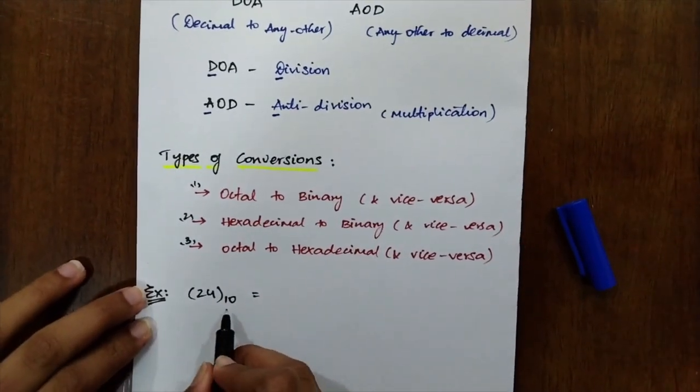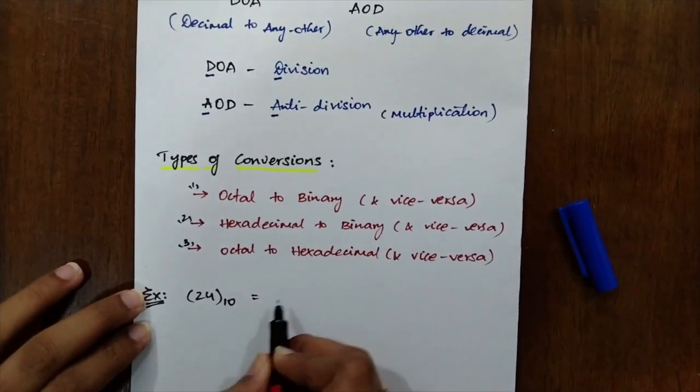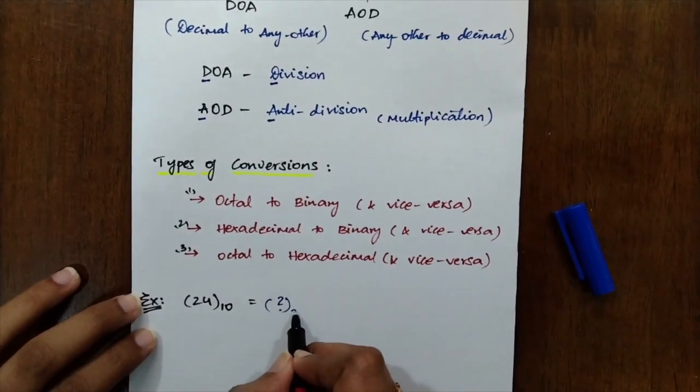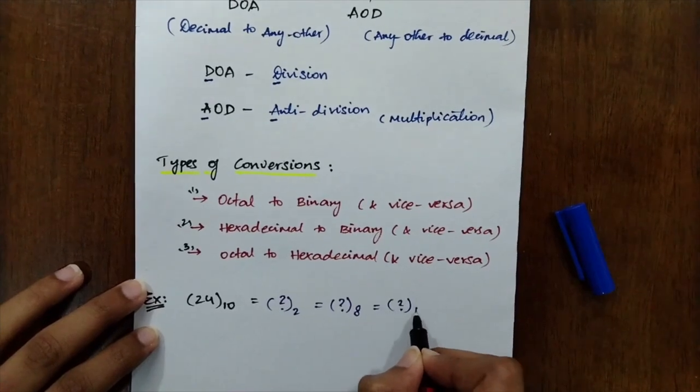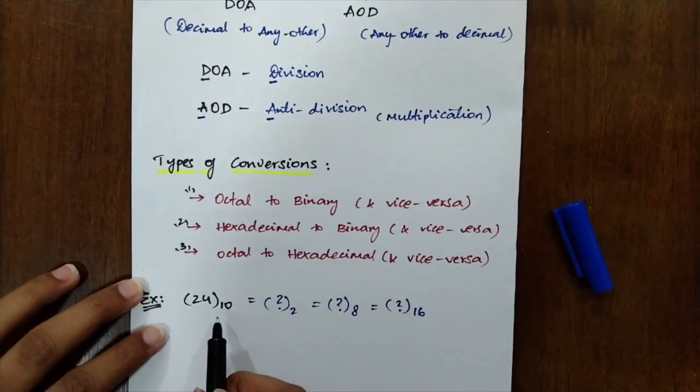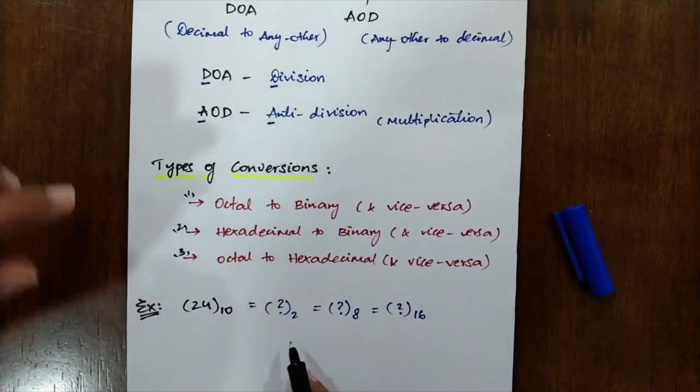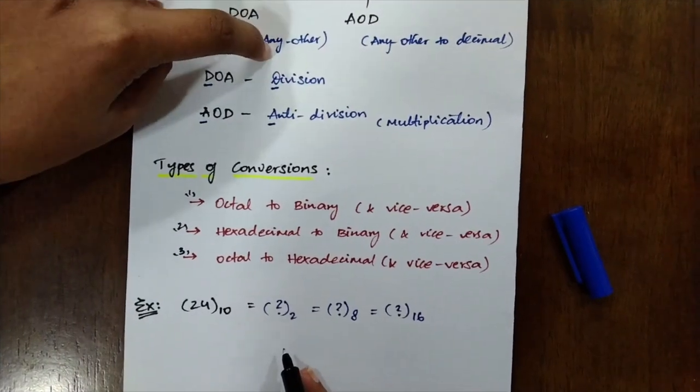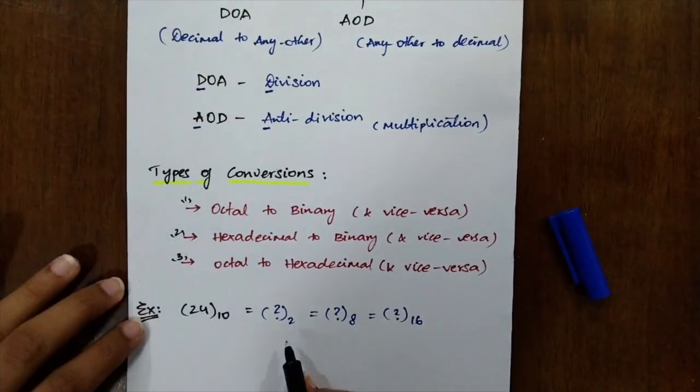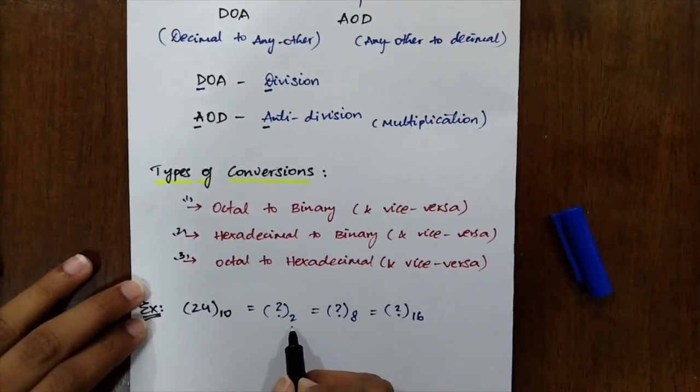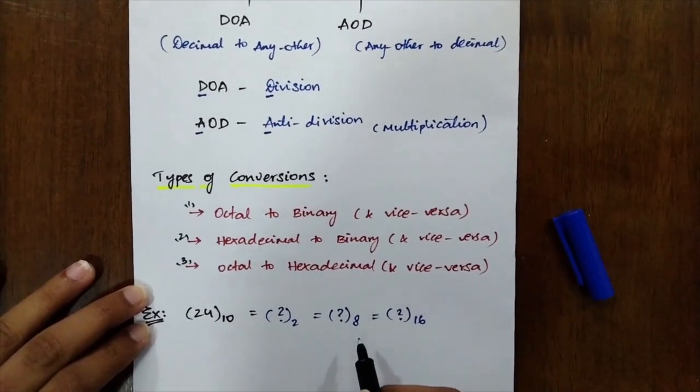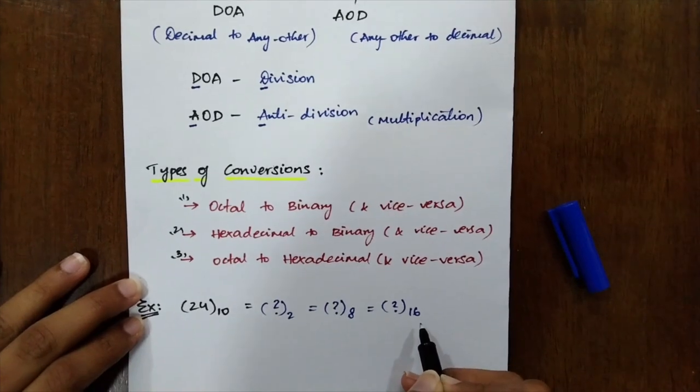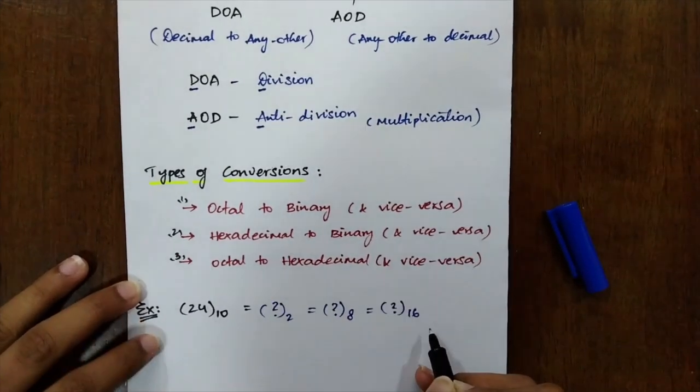Now, try converting 24 in the decimal form into any of the forms like binary, octal, or hexadecimal. See, what I have told you? Decimal to any other systems. So decimal to any other which is division. With what you will be dividing it? With their bases. For example, in binary, you will be dividing it with 2. For octal, you will be dividing with 8. For hexadecimal, you will be dividing it with 16.